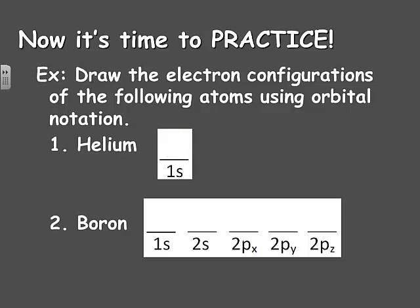Boron has five electrons. I write in my 1S orbital and fill it with two electrons — one up, one down. That's two out of five. I still have three remaining, so I go to the 2S orbital: one up, one down — that's four electrons. With one remaining, I now draw all three P orbitals — 2Px, 2Py, 2Pz — even though I'm only using one. Then I put my one electron as an up arrow in the 2Px, and that one's finished.